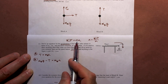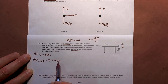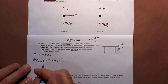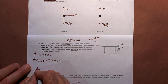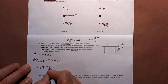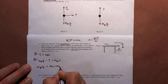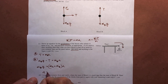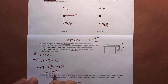That's the second law statement for each block. With a little algebra, we see that tension equals tension. By substitution, mBG equals MA plus MB times A. Solving for acceleration, we get A equals mBG over the sum of the masses: MA plus MB. That's our equation for acceleration.